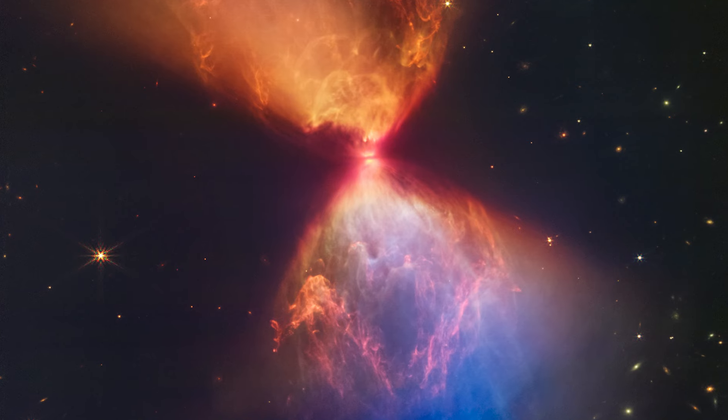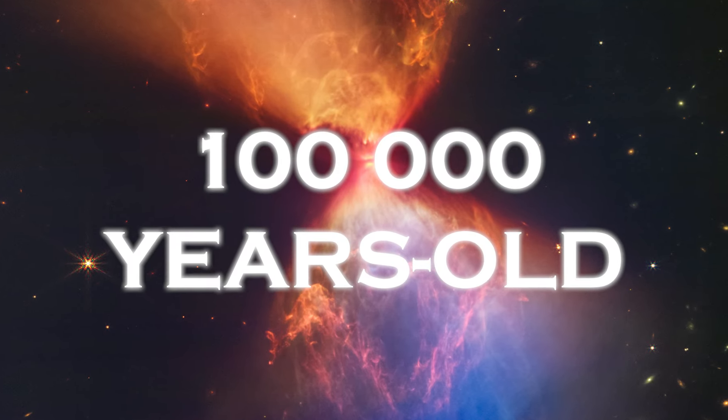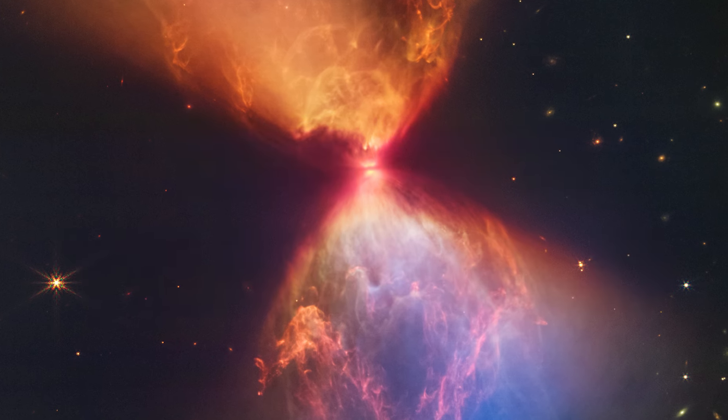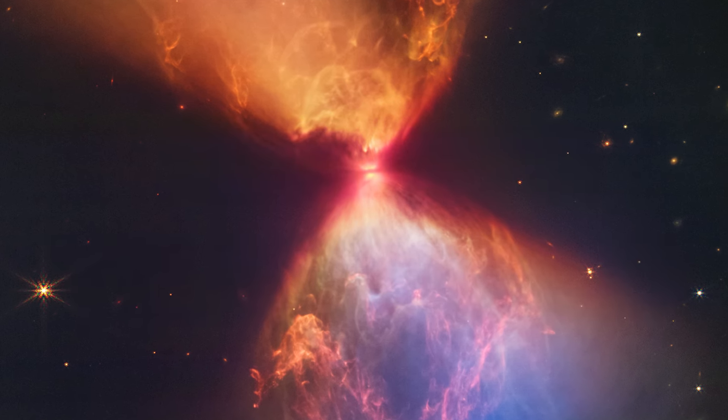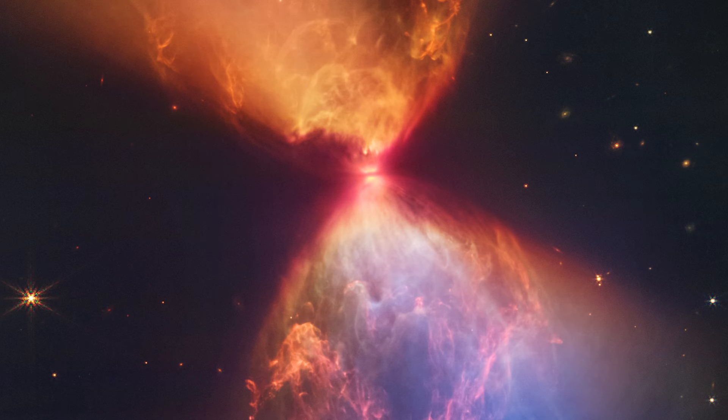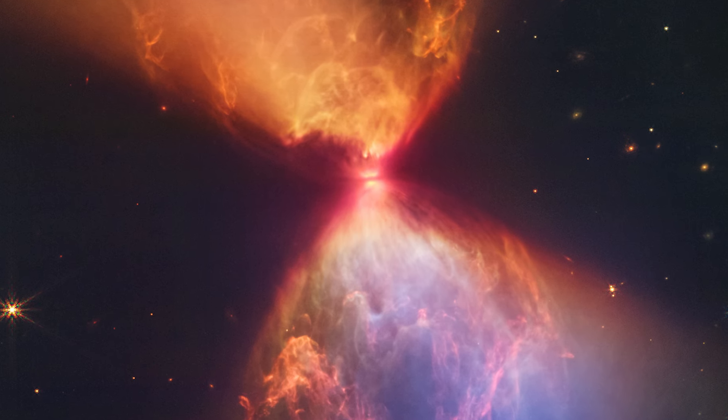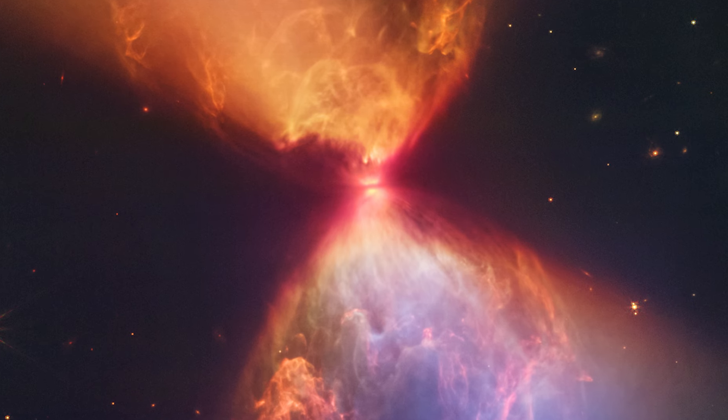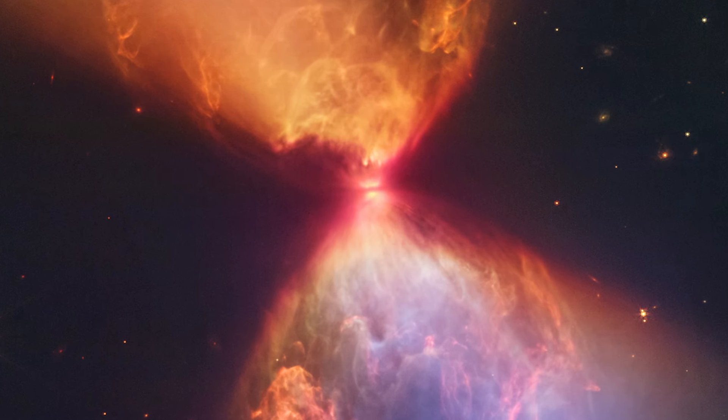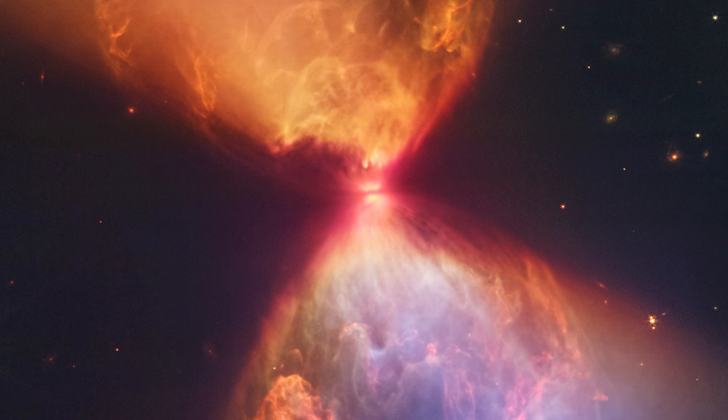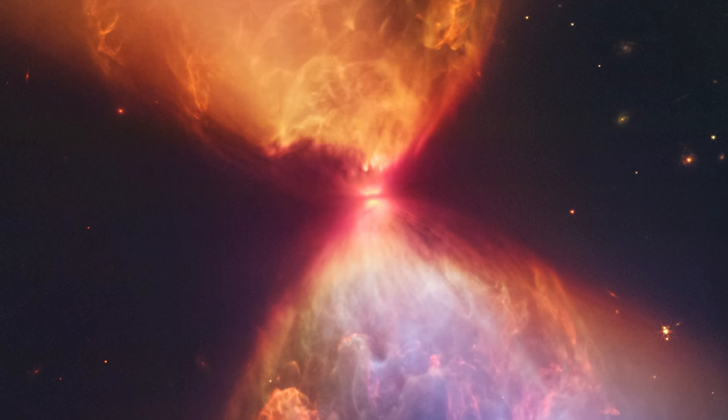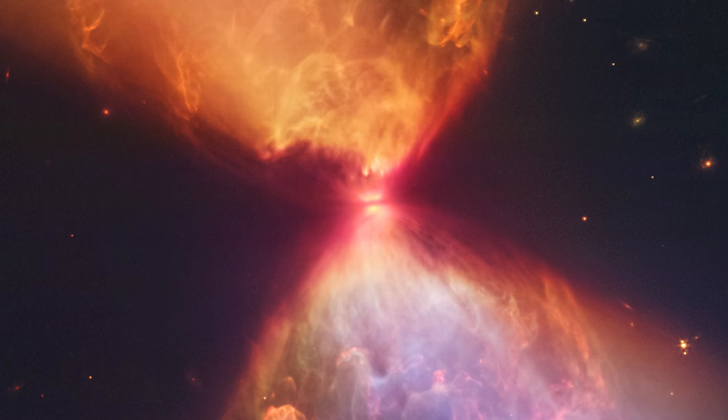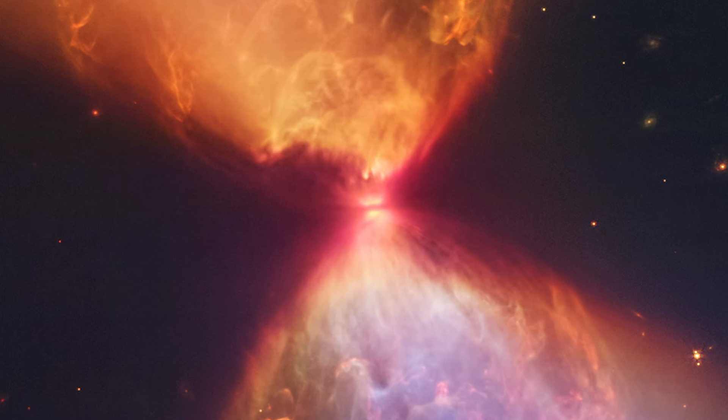In the protostar, which is approximately 100,000 years old, we can observe a bright spot in the center of an hourglass-shaped structure composed of gas and dust. This stellar cocoon reveals details in infrared light, where particles and gases ejected by the protostar collide with the surrounding material, similar to human babies burping occasionally. This manifests as bubble-like objects at the top of the hourglass. These bubbles are the result of a shock front generated by hot hydrogen gas.